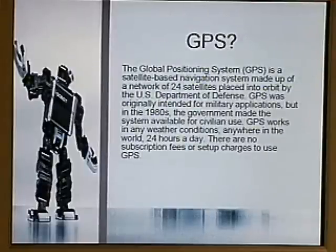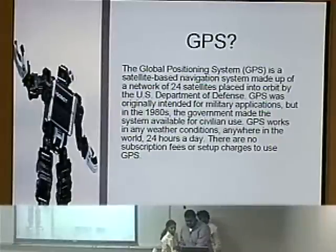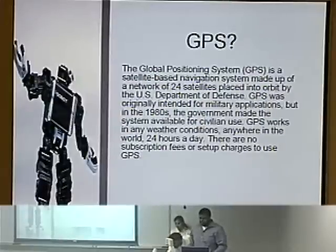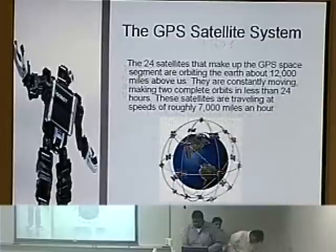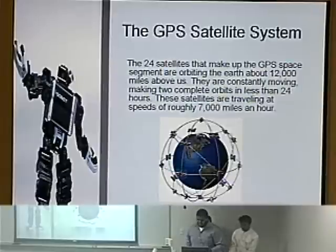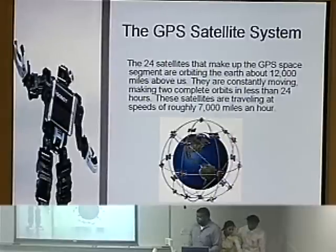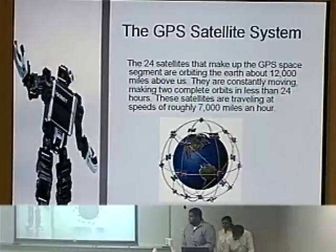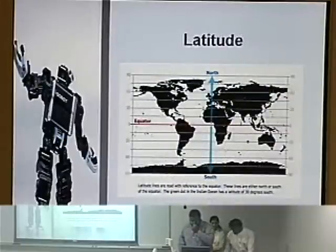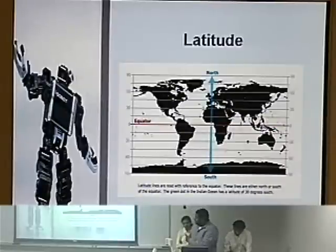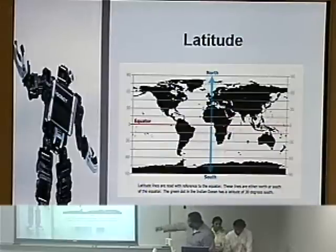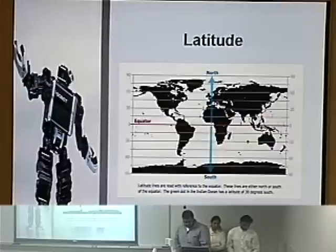GPS — Global Positioning System — is a satellite-based navigation system made up of 24 satellites placed in orbit by the U.S. Department of Defense. GPS was originally intended for military applications but is now used for civilians. The GPS uses 24 satellites traveling around the planet at seven miles per hour. For the GPS to give position information, it needs to detect at least three satellites. GPS uses latitude as a reference to give position in the world — latitude ranges from zero to 90 degrees north and zero to 90 degrees south. The green dot indicates 30 degrees south in latitude.